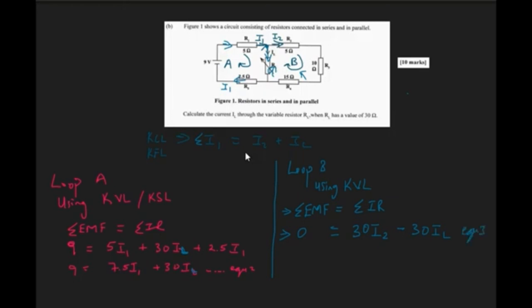So mind you, when you look at loop B, there is no battery or there is no cell in it. So therefore, the sum of the EMF is actually equal to zero.